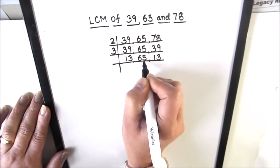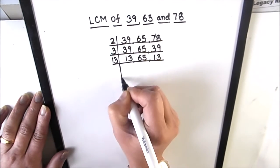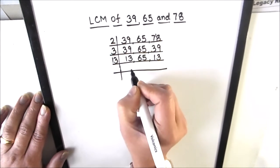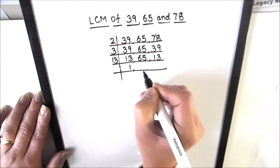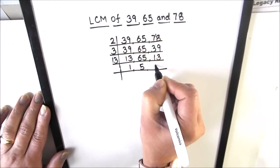Now 65 and 13 both are divisible by number 13, so we will use 13 because 13 is a prime number. 13 is only divisible by number 13. So 13 times 1 is 13, 13 times 5 is 65, and 13 times 1 is 13.